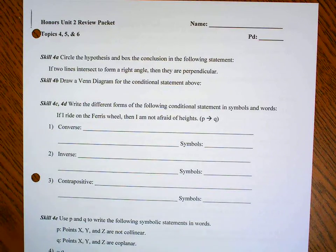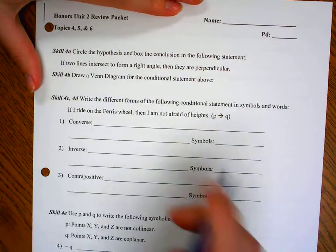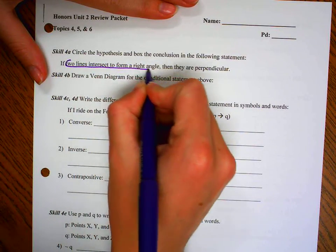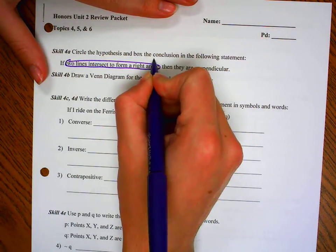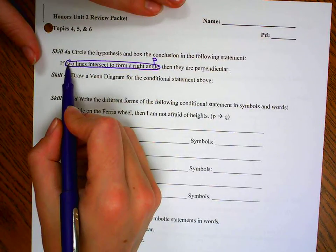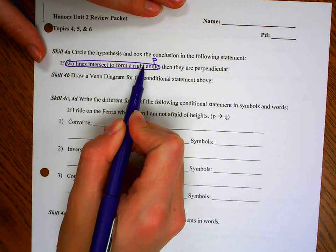It says circle the hypothesis and box the conclusion. My hypothesis comes after the word if, before the word then, and we're going to label that P, it's just good habit. On the test we might just ask you to write out the hypothesis, so you would write two lines intersect to form a right angle.